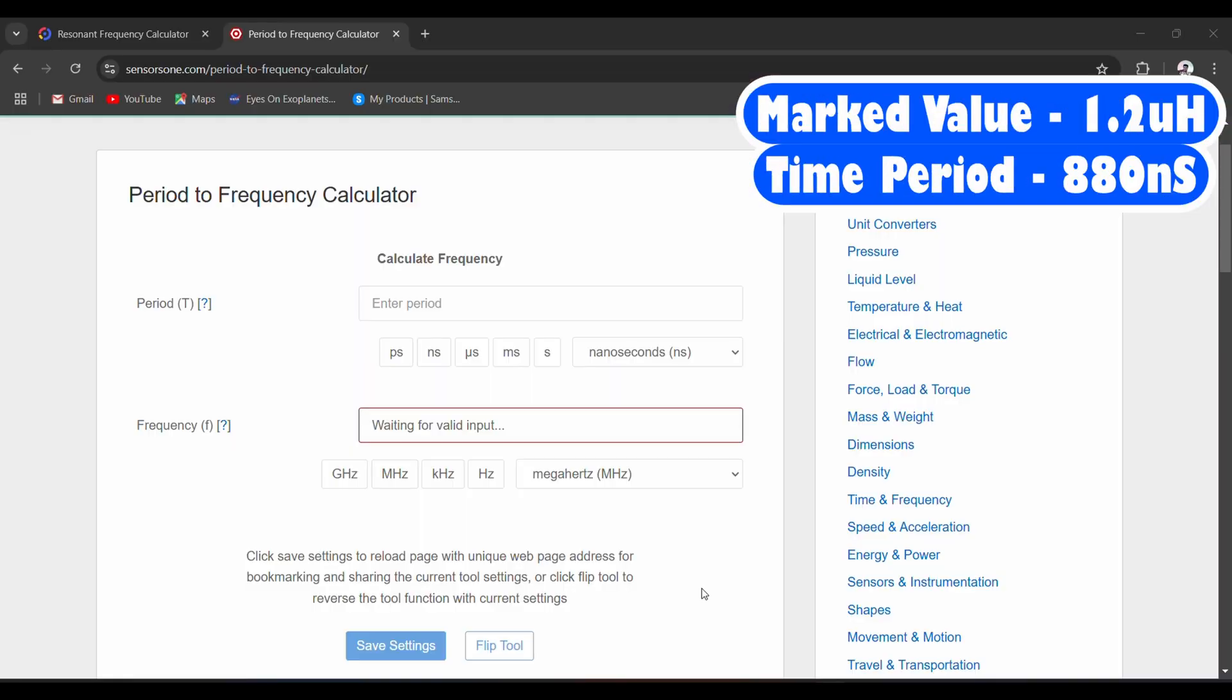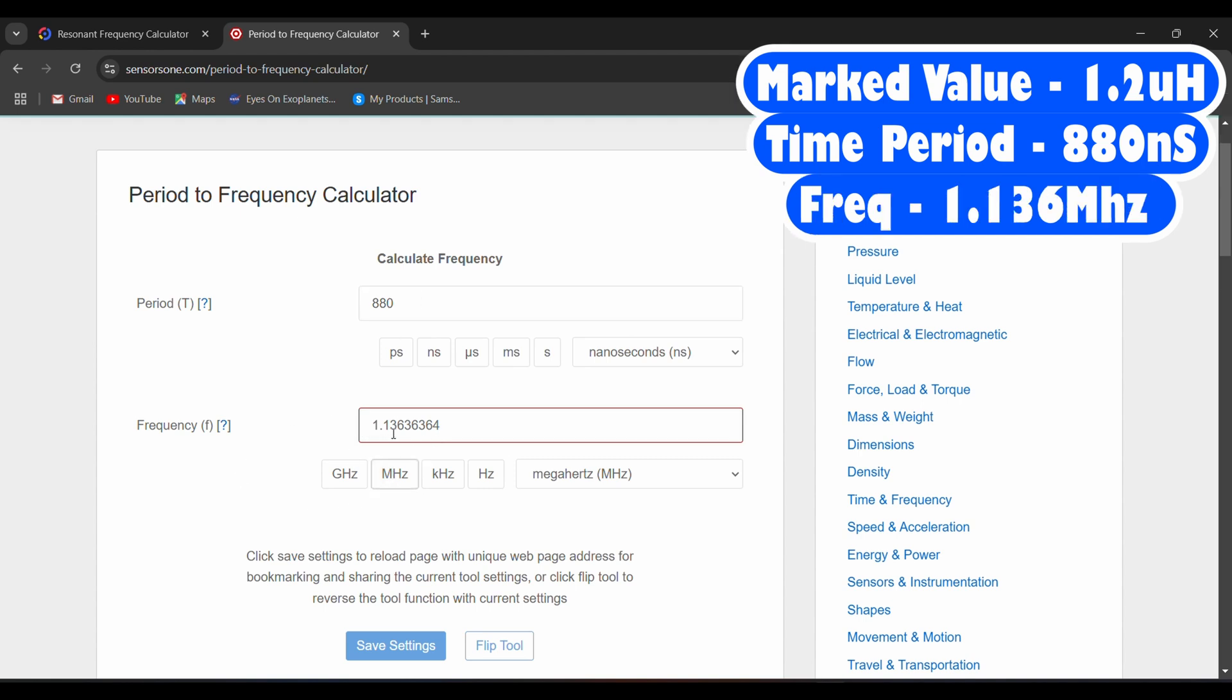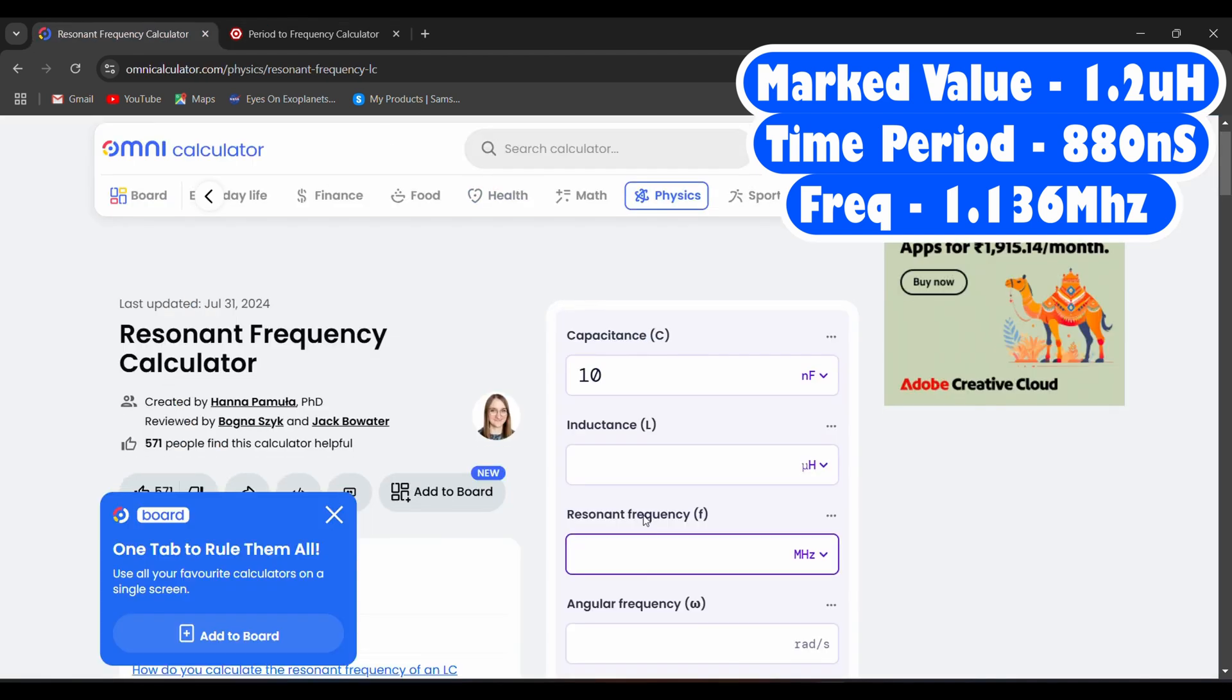Now let us go over to our online calculator and let us see if the value matches this 1.2 microhenry or not. Okay, so we got our value as 880 nanoseconds. So we will put 880 nanoseconds.